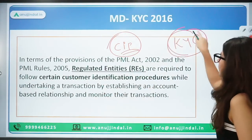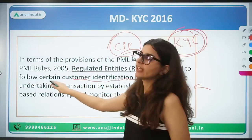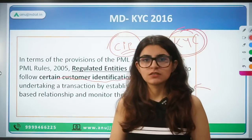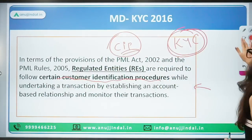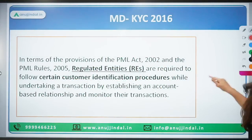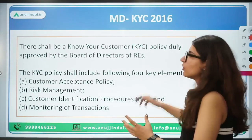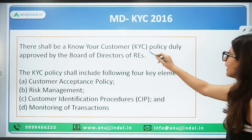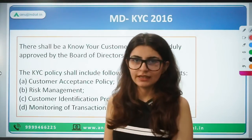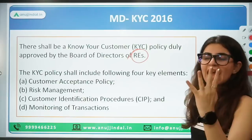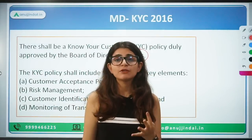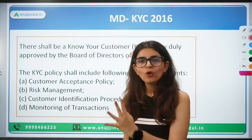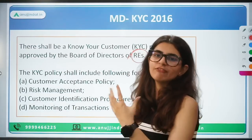In this customer identification process, every regulated entity asks for important documents from various customers. There shall be a Know Your Customer policy which is duly approved by the board of directors of every regulated entity. Every RE needs to have a KYC policy, and this KYC policy has four elements. The four elements of any KYC policy approved by the board of directors of that regulated entity are: Customer Acceptance Policy, Risk Management Policy, Customer Identification Process, and transaction monitoring.